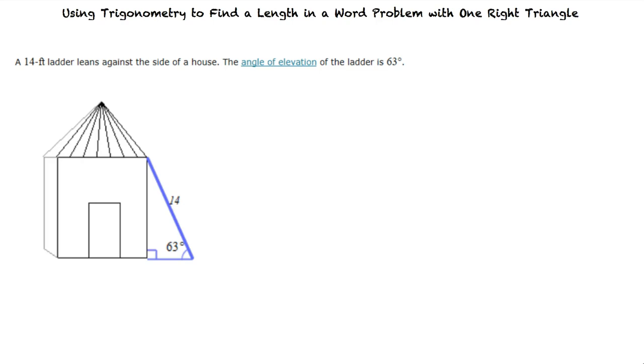So let's first identify the parts of the triangle that we know. We are given that the hypotenuse equals 14 and theta equals 63 degrees.